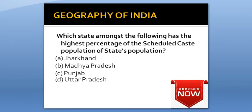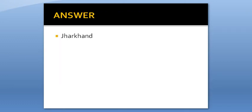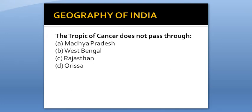Which state among the following has the highest percentage of scheduled caste population? Option A: Jharkhand. Option B: Madhya Pradesh. Option C: Punjab. Option D: Uttar Pradesh. Answer is Jharkhand.